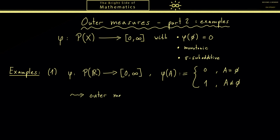This simple definition gives us immediately an outer measure. You can see immediately that all three properties are fulfilled. The first one we already talked about. Monotonicity is not a problem because you always get out one, so if you have subsets you also get one on both sides and the inequality is fulfilled. The same holds for sigma sub-additivity: on the left hand side you get one and on the right hand side the ones add up, so the inequality is fulfilled.